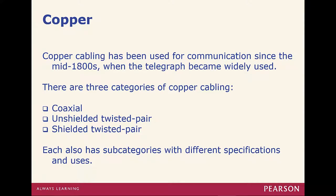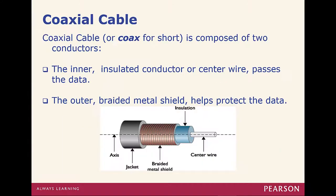Copper cabling has been the most common and widely used for communication since the mid-80s. The telegraph was one of the first examples. Types include coax, unshielded and shielded twisted pair, and each of those has separate categories as well. So let's look at coax.